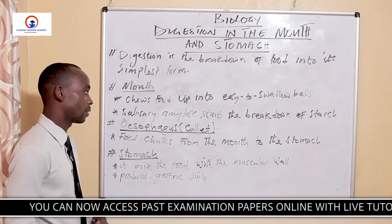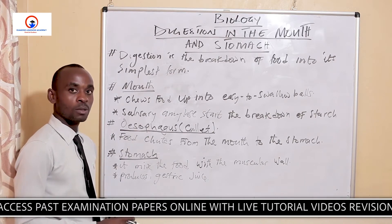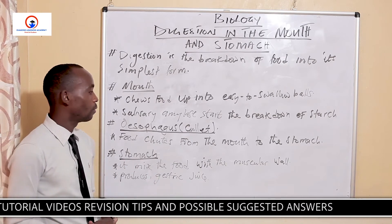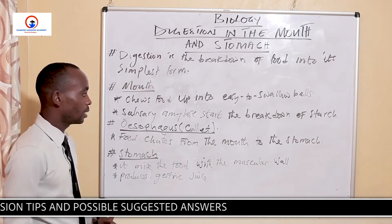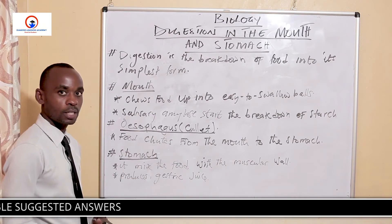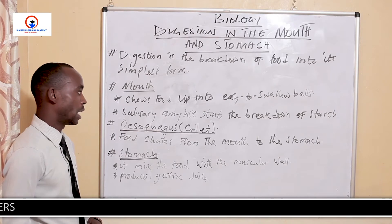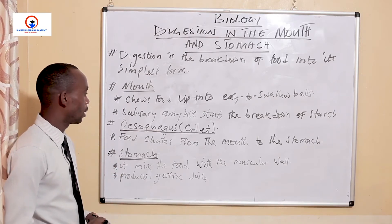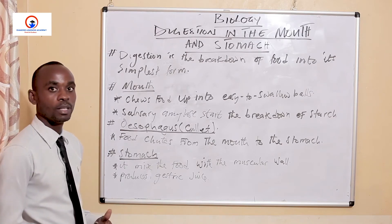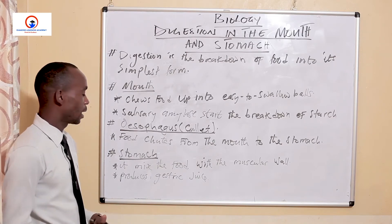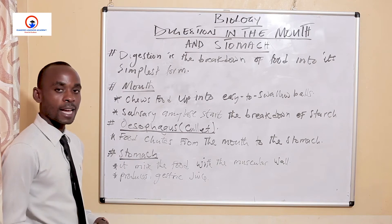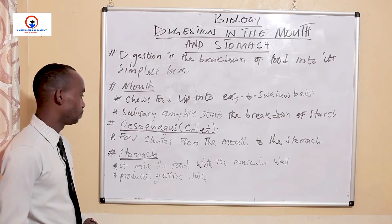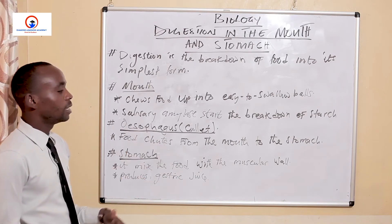Once the food has been turned into a bolus, it is pushed down into the gut, or the oesophagus. The oesophagus wall has muscles, and by the contraction and relaxation of those muscles, the food is escorted into the stomach. The process that enables the gut to allow food to pass through the oesophagus is called peristalsis, carried out by the action of two muscles that contract and relax.